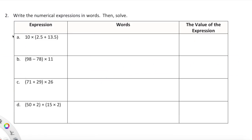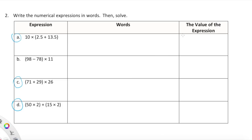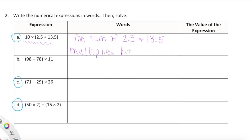Now we're looking at a few expressions that we need to write in words and then evaluate. These expressions can be read in a few different ways. One way to write this expression is: the sum of 2.5 and 13.5, multiplied by 10.